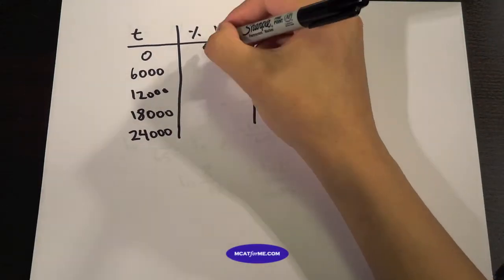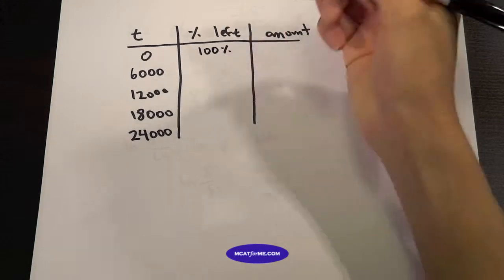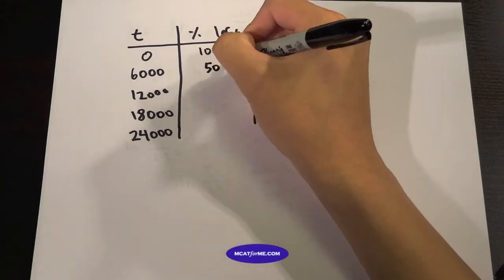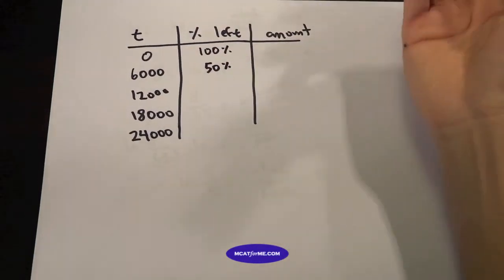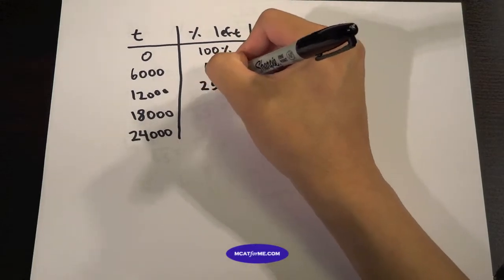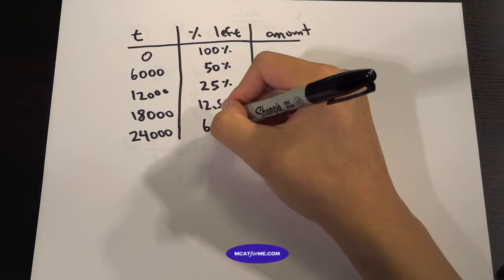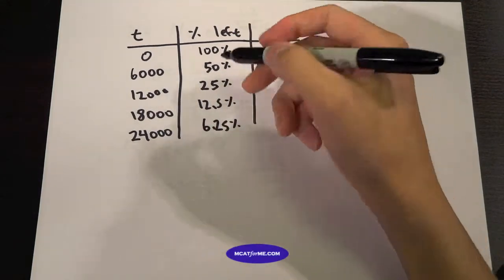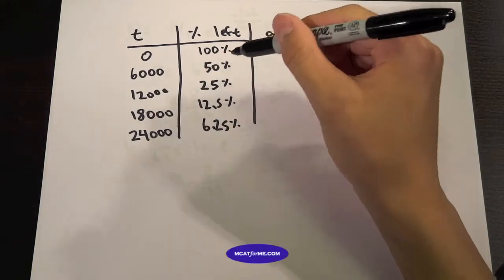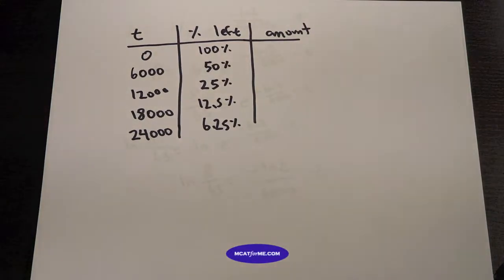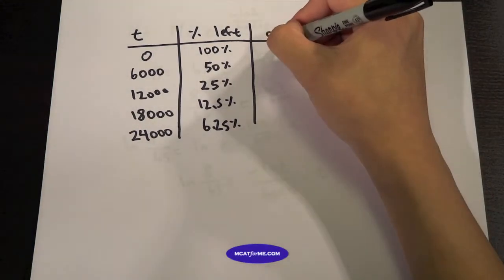And so the percent left at 0, we have 100%, right? We started with 100. Our first half-life would cut us down by half, hence the half-life. The next would cut us another half, 12.5% and 6.25%. So in 12,000 years, we would have one quarter of our original amount. So let's just start with that.